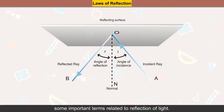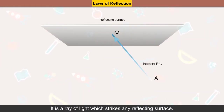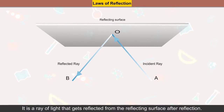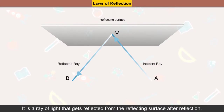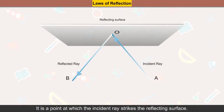Laws of Reflection. Some important terms related to reflection of light: Incident ray — it is a ray of light which strikes any reflecting surface. Reflected ray — it is a ray of light that gets reflected from the reflecting surface after reflection. Point of incidence — it is the point at which the incident ray strikes the reflecting surface.